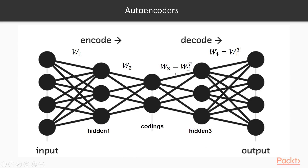An additional restriction we impose is that the weights for the third hidden layer must be the same as the weights in the second hidden layer, but transposed — for example, going from three dimensions to two, and then back from two to three. Similarly, the weights for the last layer are the same as those for the first hidden layer, transposed. This restriction helps the network learn the most efficient representation from the inputs.